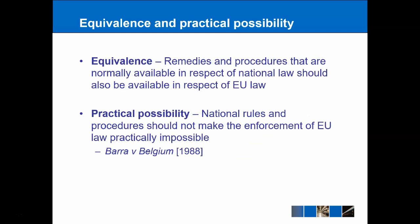The first of these principles is the principle of equivalence. The idea is that remedies and procedures normally available in national law — say in the UK, Ireland, or France — should also be available in respect of EU law. So for example, if in a particular area of UK law I could get an injunction against another person, then if I were enforcing a right under EU law in that same area, I should also be able to get an injunction. Meanwhile, there is another principle of practical possibility, which is the idea that national rules and procedures should not make the enforcement of EU law practically impossible. We can look at the case of Barra and Belgium from 1988 for this.